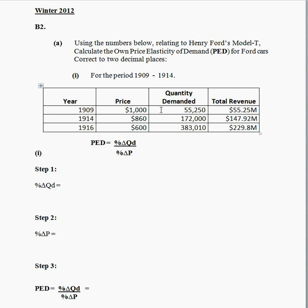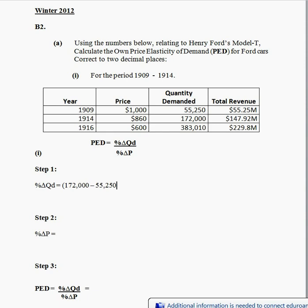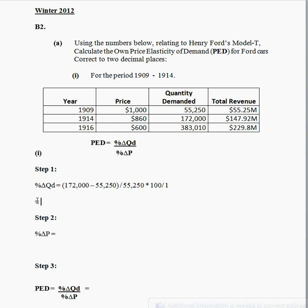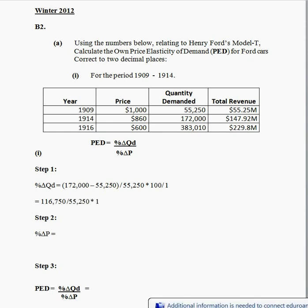Starting with step 1: between 1909 and 1914, what's the change in quantity demanded? We start with the 1914 quantity demand, which is 172,000, take away the original quantity of 55,250, divide that by the original quantity of 55,250, and multiply by 100 to get the percentage. That works out to be 116,750 over 55,250 multiplied by 100, giving us a value of 211.31.